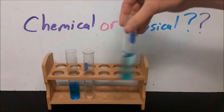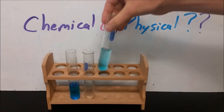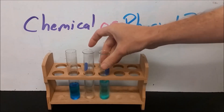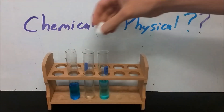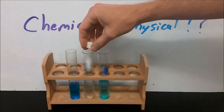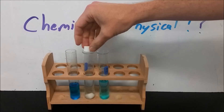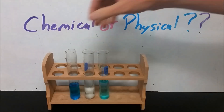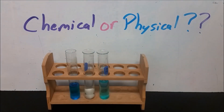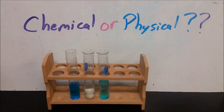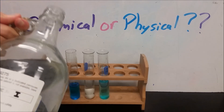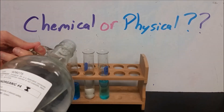Some would consider this a chemical change because there are bonds broken and remade. It's the same type of dissolving, but all of a sudden a lot of those arguments change when we put sugar in instead of a salt. And although it's a very similar process, this would be more regarded as a chemical change even though it's the same thing happening.